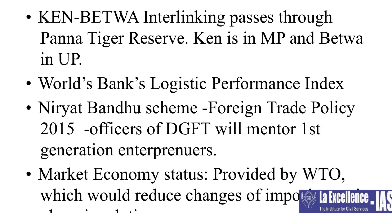The next important topic is the Ken-Betwa river interlinking. It is very important mainly because for the first time there is interlinking of rivers between two states — Ken in Madhya Pradesh and Betwa in Uttar Pradesh. In between these two rivers there is the Panna Tiger Reserve, and some parts of it are being submerged. Two questions can come: which is the first interlinking of rivers and which are the two rivers, and also which tiger reserve is actually present between Ken and Betwa.